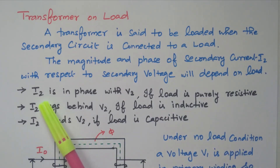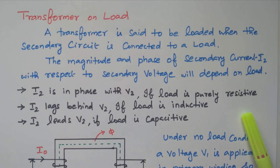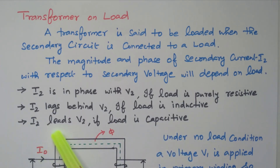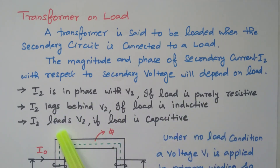For example, I2 is in phase with V2 — that is, secondary current and secondary voltage both are in phase — if the load is purely resistive. We know that for a resistive load, current and voltage are in phase. If the load is inductive, the current I2 lags behind V2; secondary current is lagging the secondary voltage. If the load is capacitive, the current I2 leads V2; secondary current is leading the voltage. So, depending upon the load, it may be in phase for resistive load, lagging for inductive load, and leading for capacitive load.